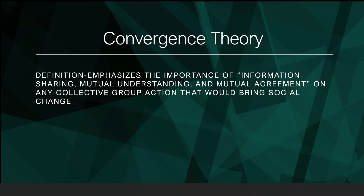Convergence Theory is characterized by three distinctive features. First, information is shared using a participatory process in which there is no sender or receiver — everyone creates and shares information. Participants include individuals, community groups, organizations, and institutions such as professional associations, churches, and schools. Second, communication emphasizes individual perceptions and interpretations, encourages ongoing dialogue, and fosters mutual understanding. Third, communication is horizontal, involving two or more equal participants who aim to reach mutual agreement that may stimulate group action.